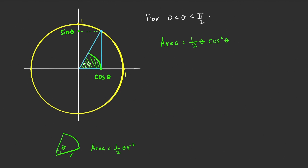Now, if we look at this triangle with base equal to one, it is clear that the area of this triangle is larger than the area of the green sector. The area of this triangle is one-half, base is one, and the height is equal to sine theta, so this is just one-half sine theta.